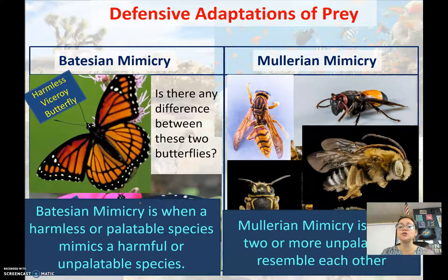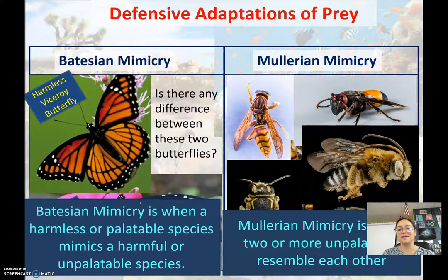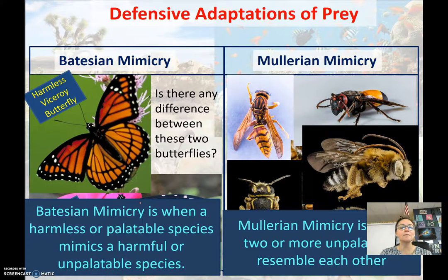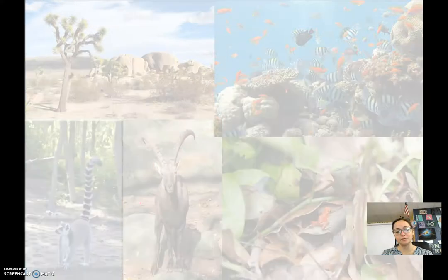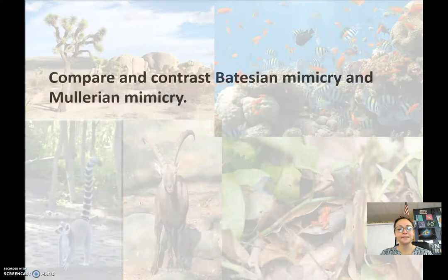In Müllerian mimicry, two or more unpalatable species — unpalatable meaning they don't taste good — resemble each other. Whereas in Batesian mimicry, it's when a harmless or palatable species mimics a harmful or unpalatable species. That can go in your box seven.